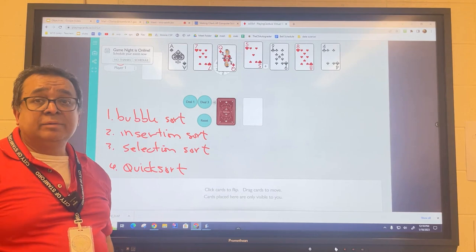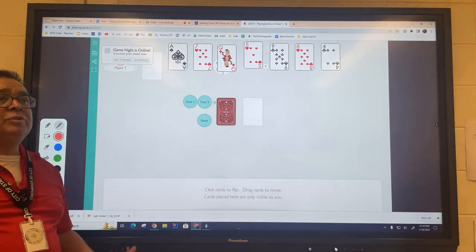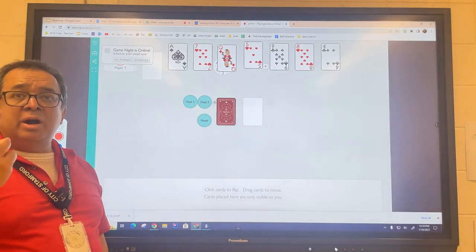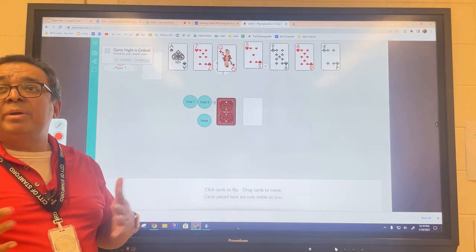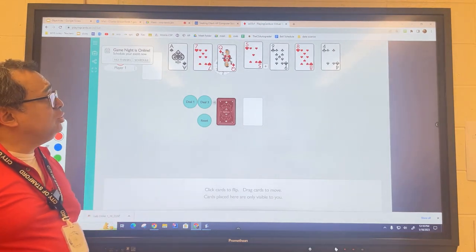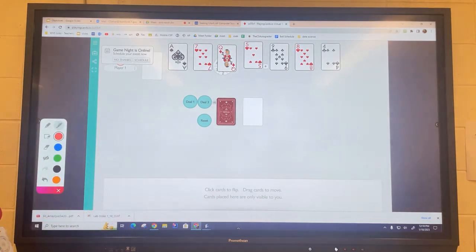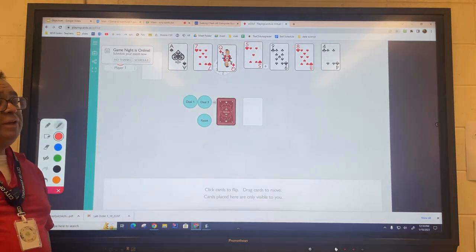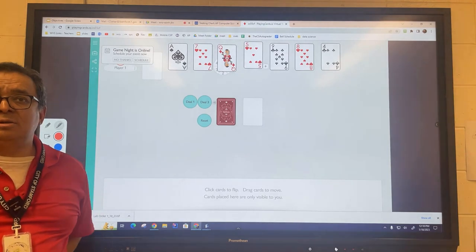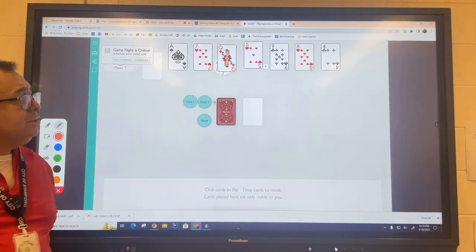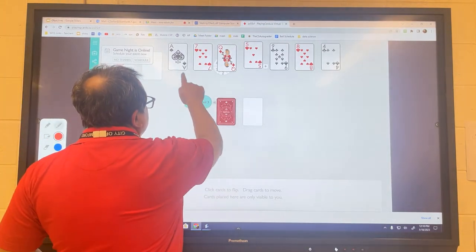So what we're going to do for bubble sort is we're going to look at two cards at a time and then we're going to compare them. The first two we're going to look at will be these two, and we're going to ask ourselves the question: is the seven bigger than the ace? It is not, so we're going to swap these two cards.